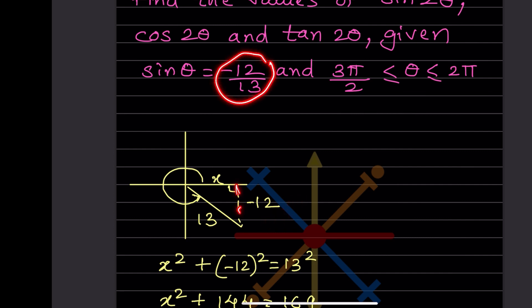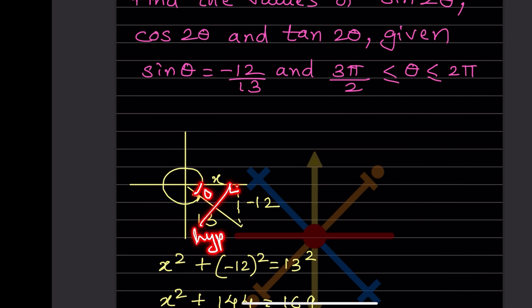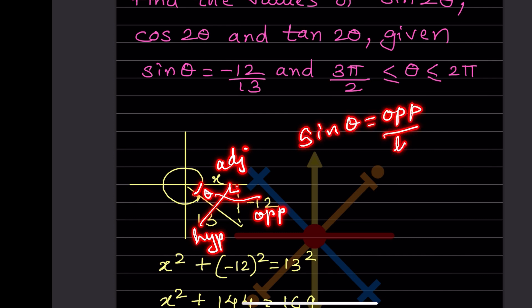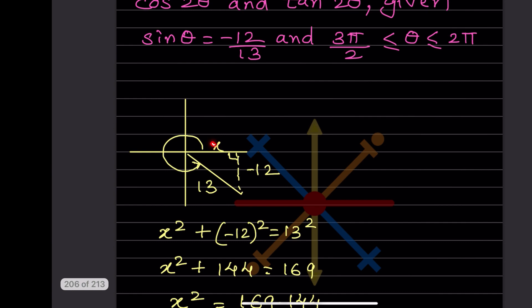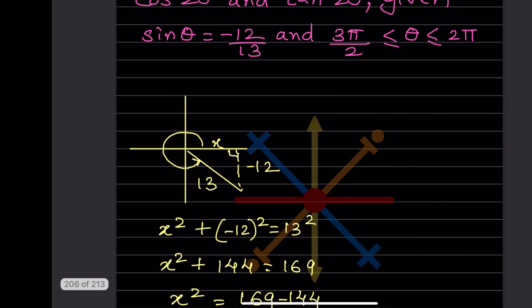We draw a right triangle. sinθ = opposite/hypotenuse = -12/13, so the opposite side is -12 and the hypotenuse is 13. Let the adjacent side be x.